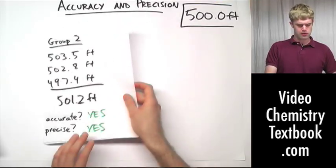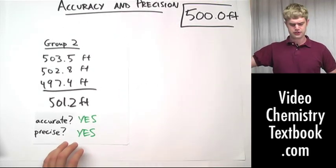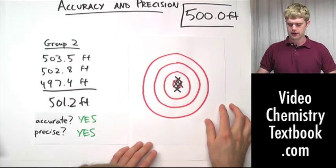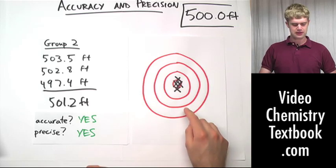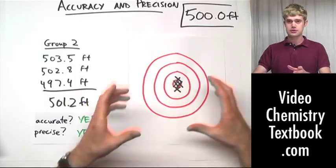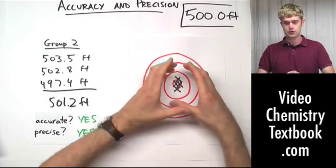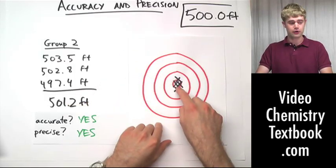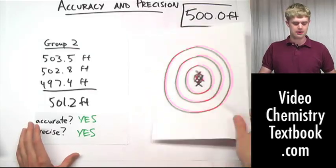Group number two was accurate and it was precise. So, using our bullseye target, we can symbolize it like this. All the hits are very close to the center, very close to the actual value. And because they're precise, all the numbers are also close together. So, accurate and precise, symbolized by the target here.